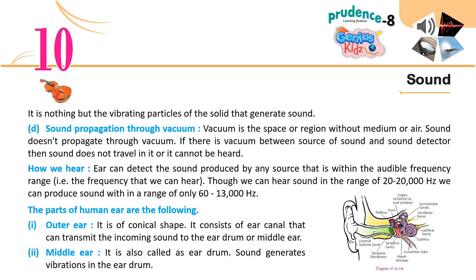How we hear: the ear can detect sound produced by any source within the audible frequency range. Though we can hear sound in the range of 20 to 20,000 Hz, we can produce sound only in the range of 60 to 13,000 Hz. The parts of the human ear are: 1. Outer ear — of conical shape, consisting of an ear canal that transmits incoming sound to the eardrum or middle ear. 2. Middle ear — also called the eardrum; sound generates vibrations in the eardrum.